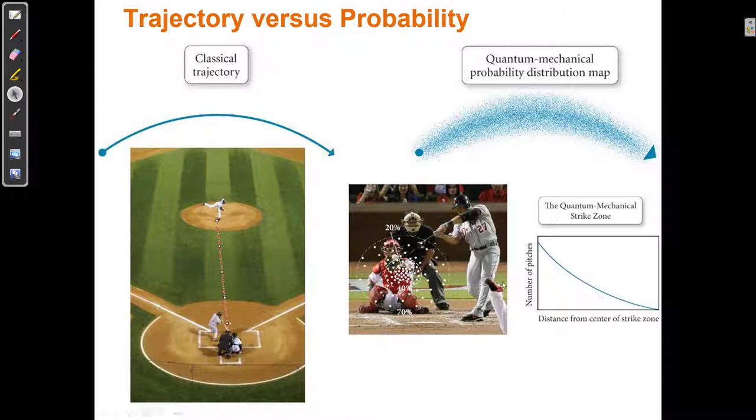Well, we cannot say that with particles that are very small. If I throw a baseball, it has one path. It has one trajectory. It goes from here to here, and here's the path it takes. If I throw an electron baseball that's the size of an electron, it goes from here and it ends up here, but where is it in between? Between any one of these dots are the possible positions that that electron could take on its way from point A to point B.